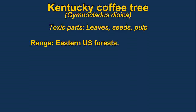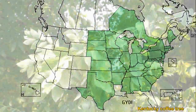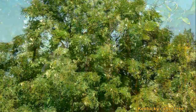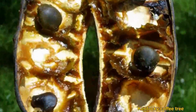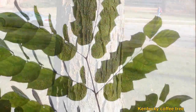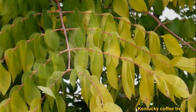Kentucky coffee tree is a member of the pea family. The most important toxin is probably cytisine, which acts like nicotine. The main hazard is to livestock, especially if they eat the pods on the ground or young fruit. It could also be confused with a pea plant.